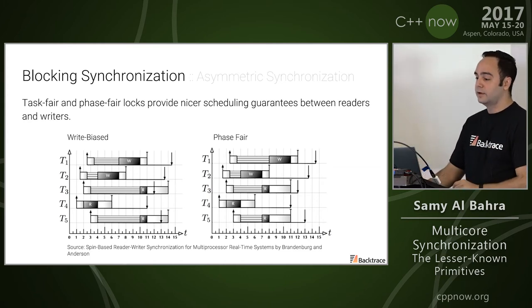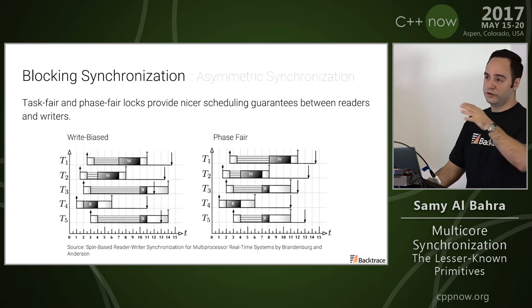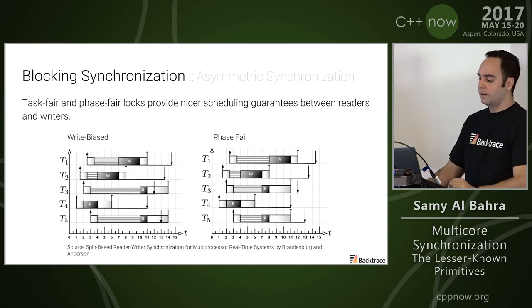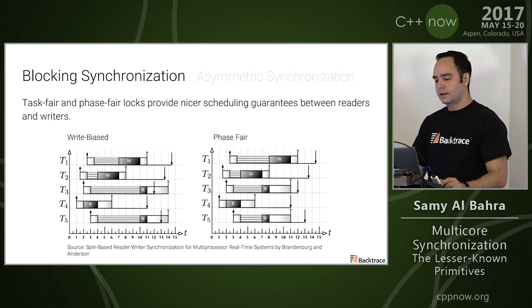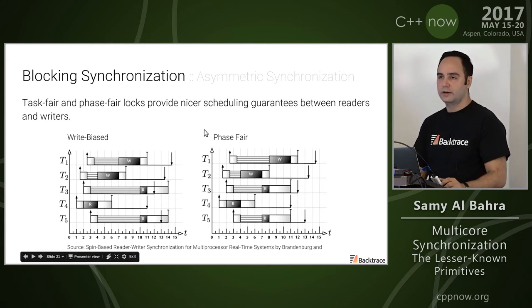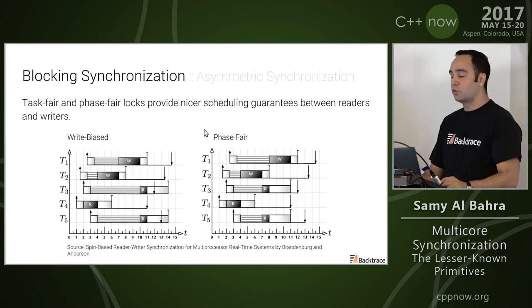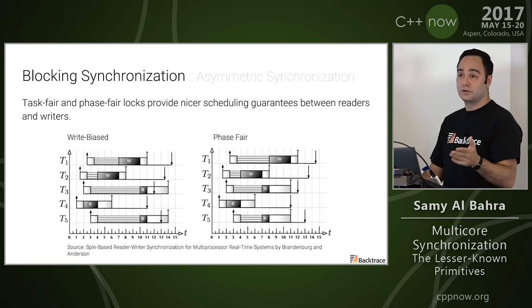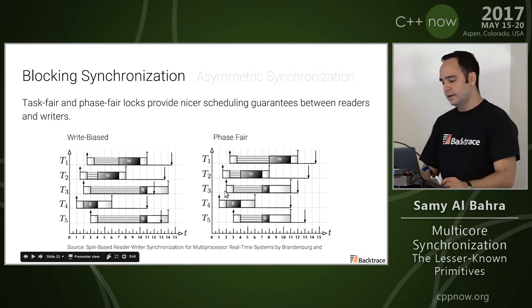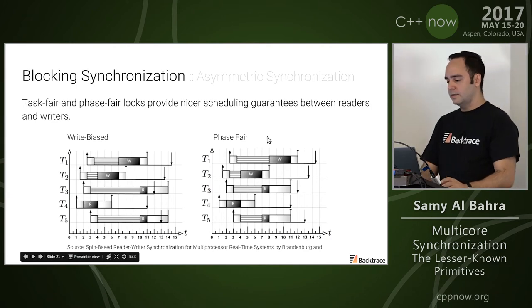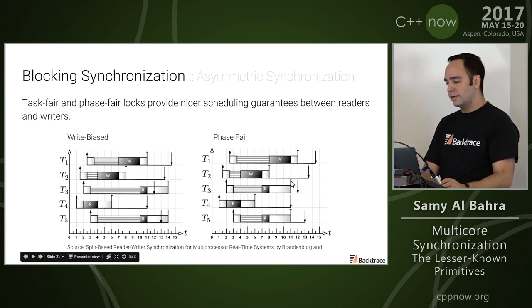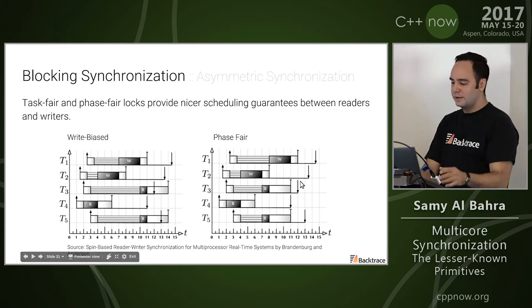Another very interesting thing is biasing. Most read-write locks tend to be write-biased, which can lead to livelock and starvation for readers. There are improvements: task-fair locks, where acquires are granted the lock in order with respect to their phase (read or write), and phase-fair locks, which provide fairness with respect to both readers and writers with forward progress guarantees for both. The chart shows an example schedule of a write-biased lock versus a phase-fair lock — overall job completion time is reduced because you have fairness between read phases and write phases.